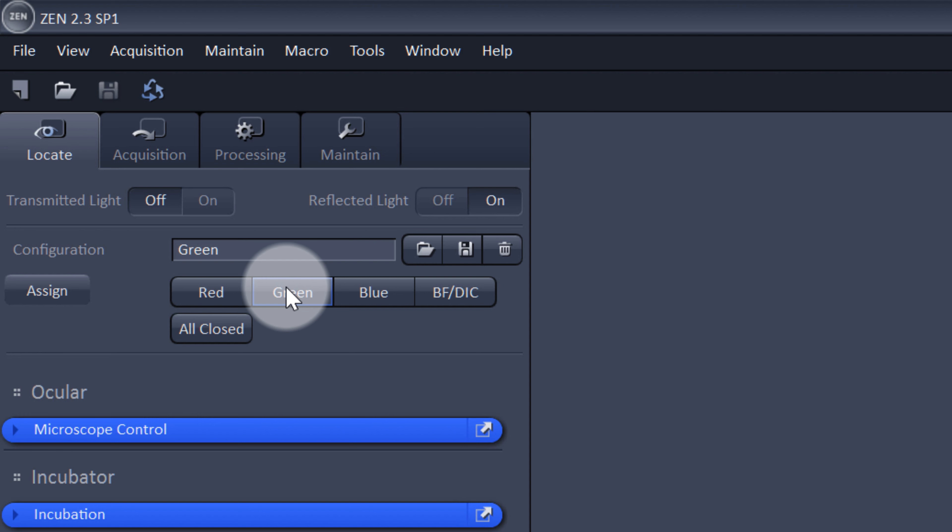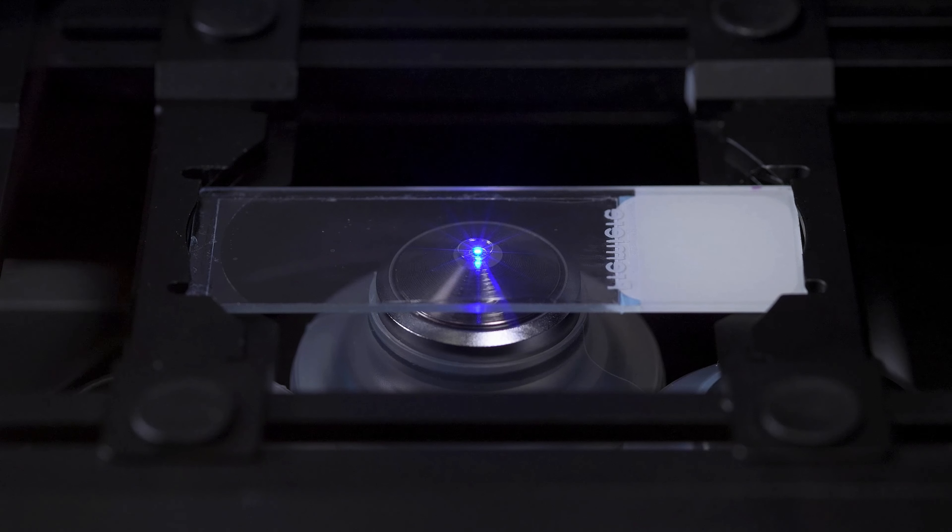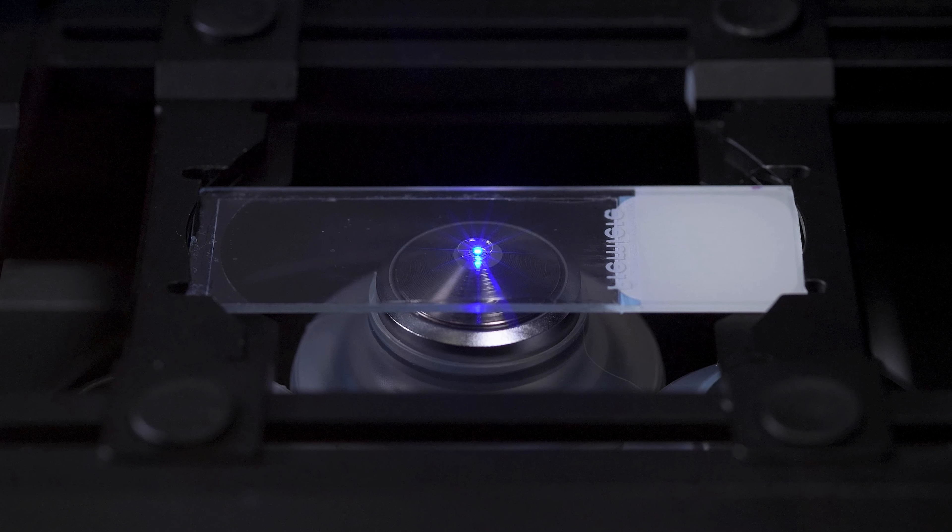We recommend selecting a channel where you expect the most fluorescence. For many that use DAPI as a nuclear marker, this channel is a common choice. The human eye is much more sensitive to green range wavelengths, however. So if you know you have good labeling in the green channel, this is our preferred option. Since oil is now touching the objective, our focus position is very close to where it needs to be. So from here we will only use the fine focus knob on the microscope.